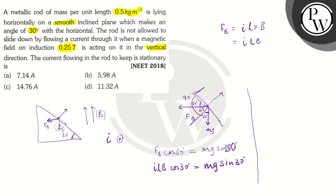On rearranging these terms, we can get I is equal to M by L, G sin 30 divided by B cos 30.